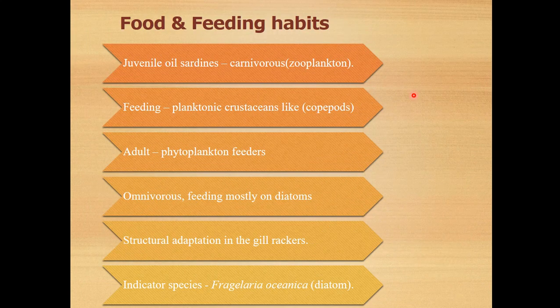About food and feeding habits: it is a bottom feeder, feeding upon muddy organic matter present in the sea. It has carnivorous habits, feeding upon dead animals, insects, and planktonic crustaceans like copepods. Adults feed upon phytoplankton. Feeding is mostly omnivorous, including diatoms. Structural adaptations in the gill rakers indicate feeding on diatoms and a potent feeding habit.